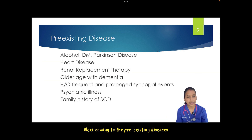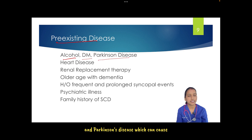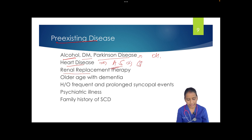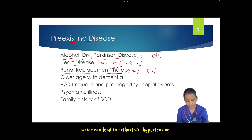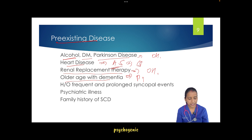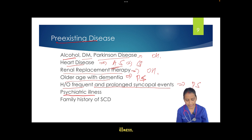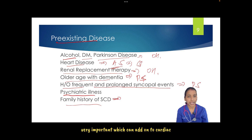Pre-existing diseases that can contribute to syncope include alcohol use, diabetes mellitus, and Parkinson's disease, which can cause orthostatic hypotension. History of heart disease — arrhythmias or structural heart disease — predisposes to cardiac syncope. Renal replacement therapy can lead to orthostatic hypotension. Older age with dementia can present with psychogenic syncope, as can history of frequent prolonged syncopal events or any psychiatric illness. Family history of sudden cardiac death is very important.